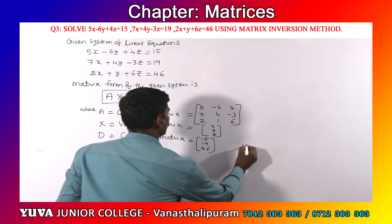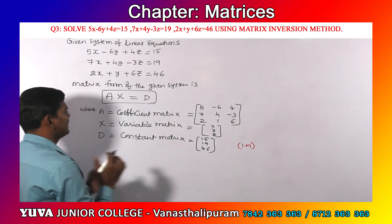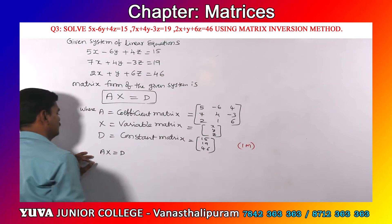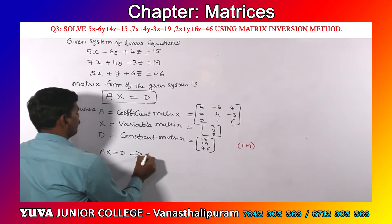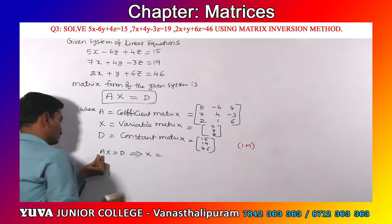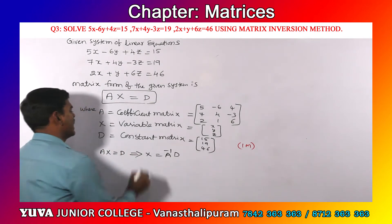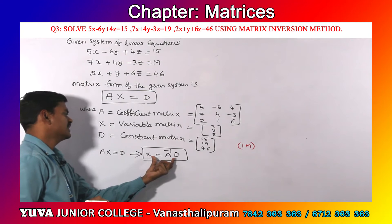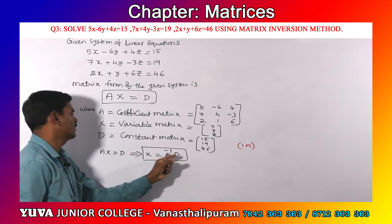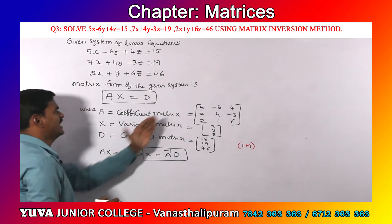Now, for writing this information you will get one mark. In the matrix inversion method, since AX equals D, we solve for X by shifting A to the right-hand side: X equals A inverse into D. This formula requires us to find A inverse.